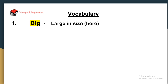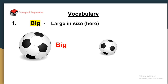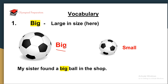The very first word is 'big.' Big means large in size. You can see two balls here — the first ball is big in size compared to the other ball which is small in size. Let us see the sentence associated with this: 'I found a big ball in the shop.' Here we are telling something about the size of the ball.